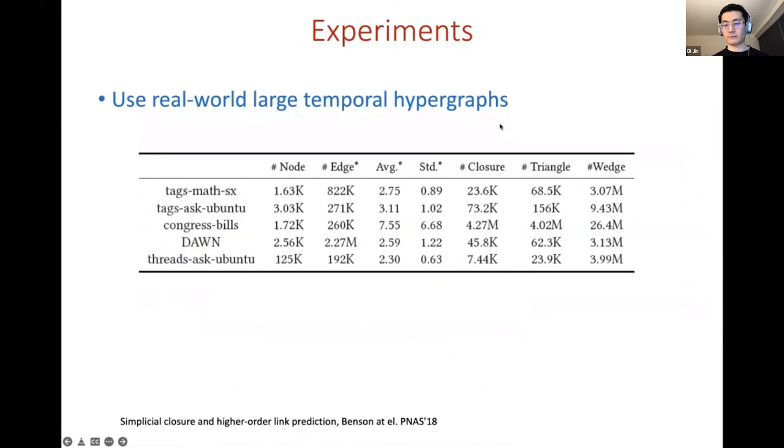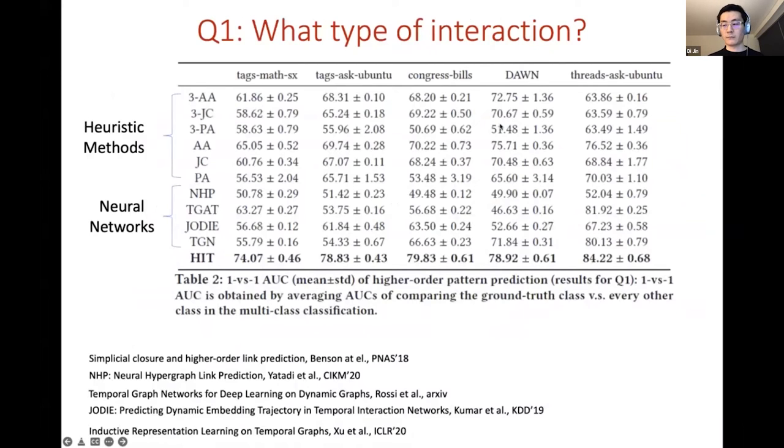Now let's see the experiments. We evaluate our model over five real world large temporal hypergraphs. Note that these data sets may contain hundreds of thousands or even millions of hyper edges. We use tens of thousands to millions of higher order patterns among three nodes to construct training, validation, and testing data sets.